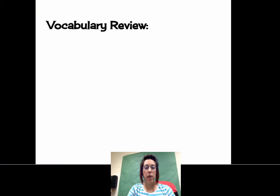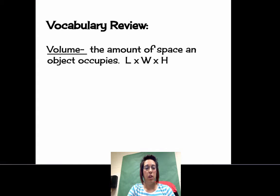So we start with a vocabulary review. The first thing is volume. Volume is the amount of space an object occupies. So length times width times height.